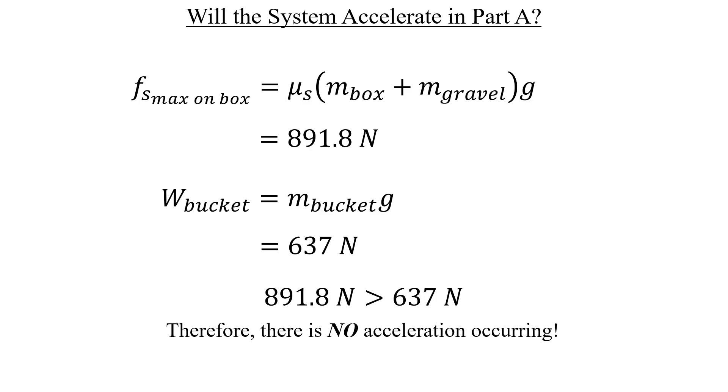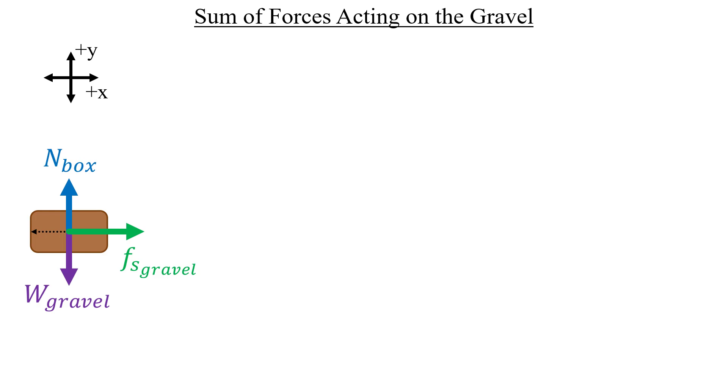That means we only need to calculate the current static friction acting on the box and gravel to answer this portion. We can figure that out by doing a sum of forces on each object, starting with the gravel. Since there's no acceleration, the sum of forces in the x direction has to be equal to zero. That gives us one half of the answer for Part A immediately.